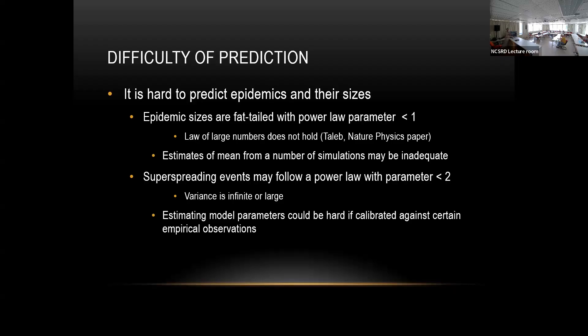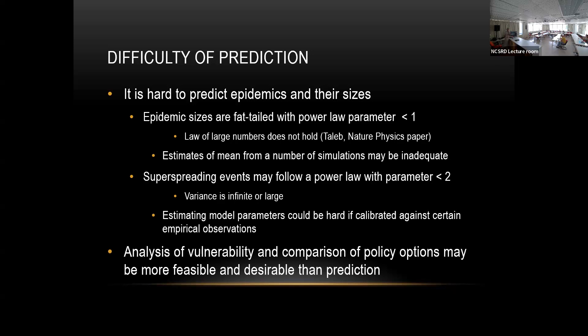Estimating model parameters can be hard if you calibrate against empirical observations. There are some fundamental problems with this. Instead of trying to optimize policy, maybe one option is to look at analysis of vulnerability and compare policy options given all the different uncertain outcomes that could happen.